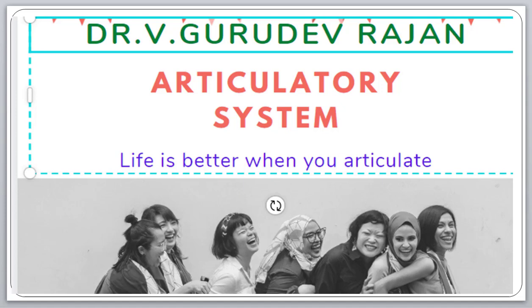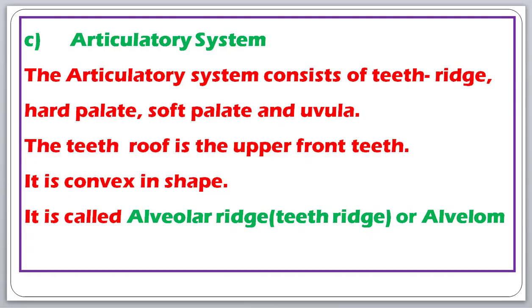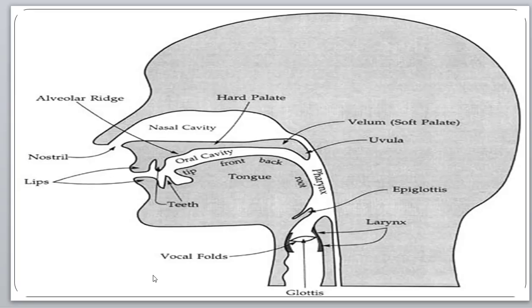Now when the sound comes out of the vocal cord, the articulatory system takes its role. The articulatory system consists of teeth ridge, hard palate, soft palate, and uvula. Let's see the picture. When the sound passes the vocal cord it comes to the uvula, and there is a hard palate, soft palate, teeth, and alveolar ridges.